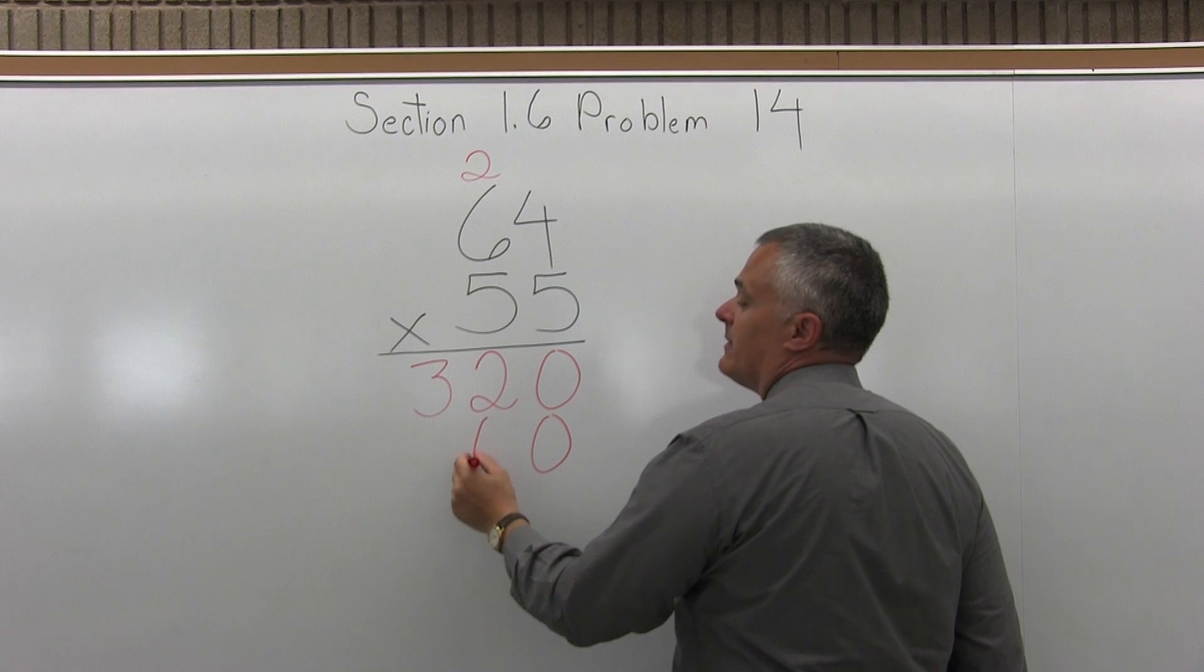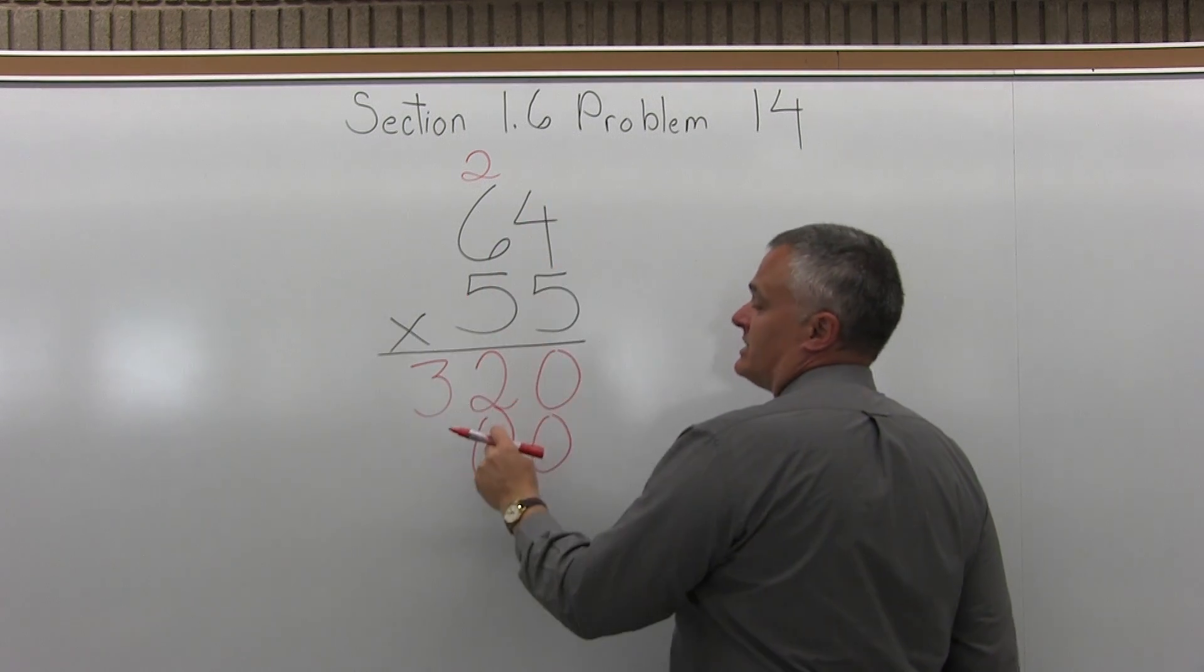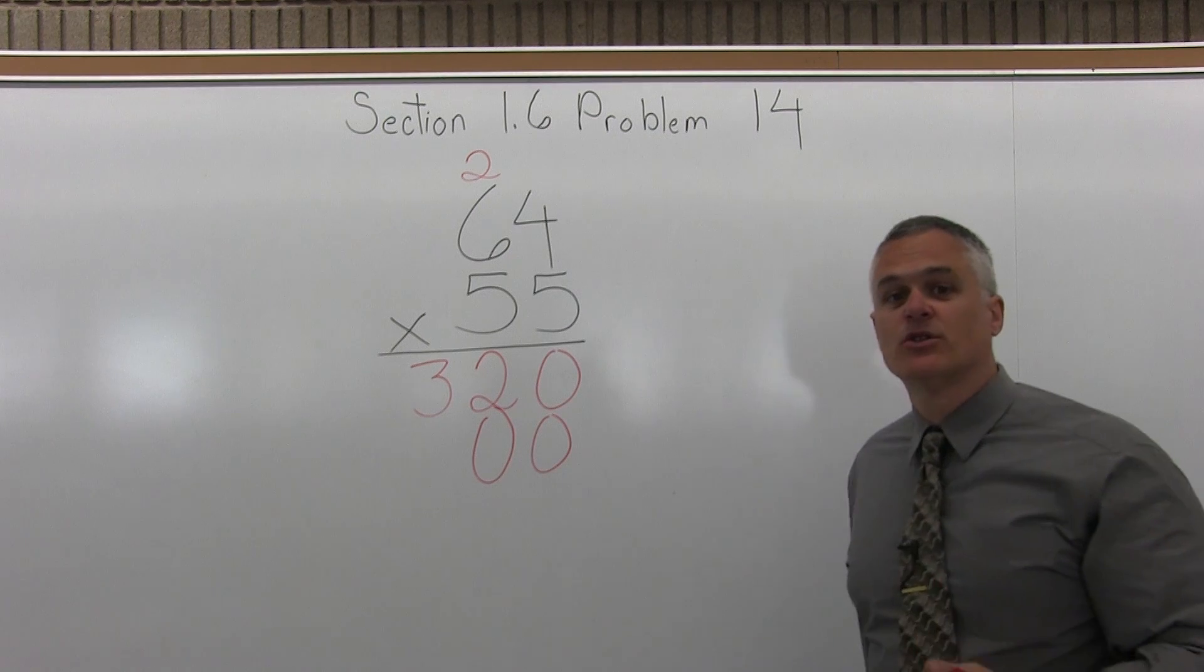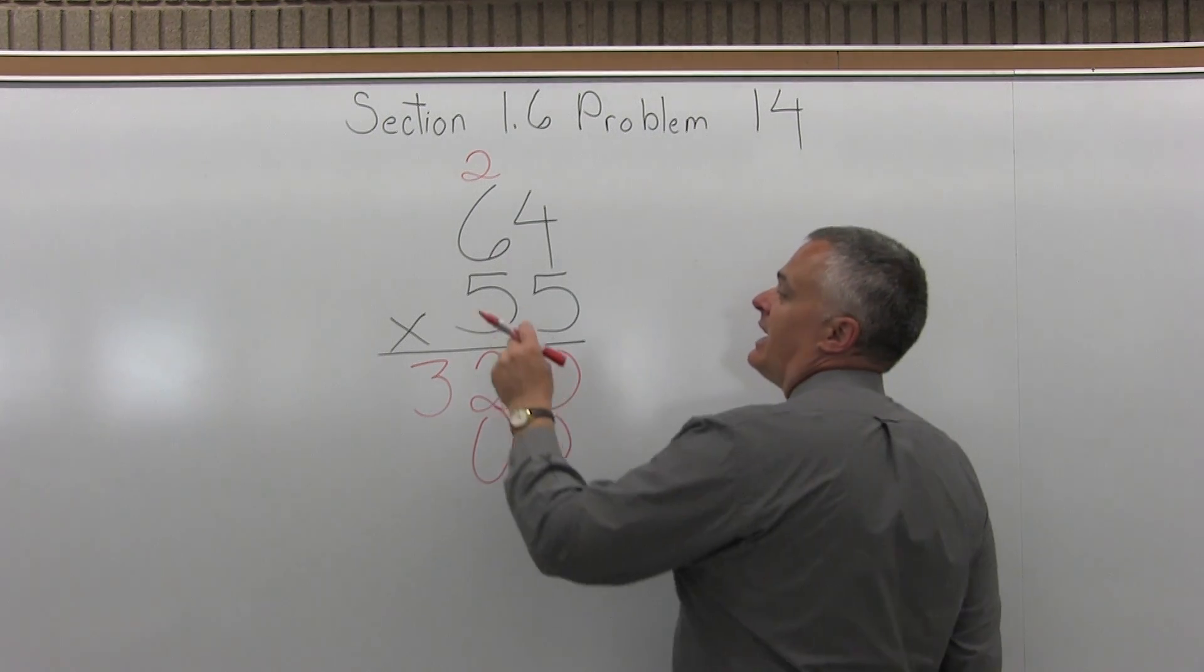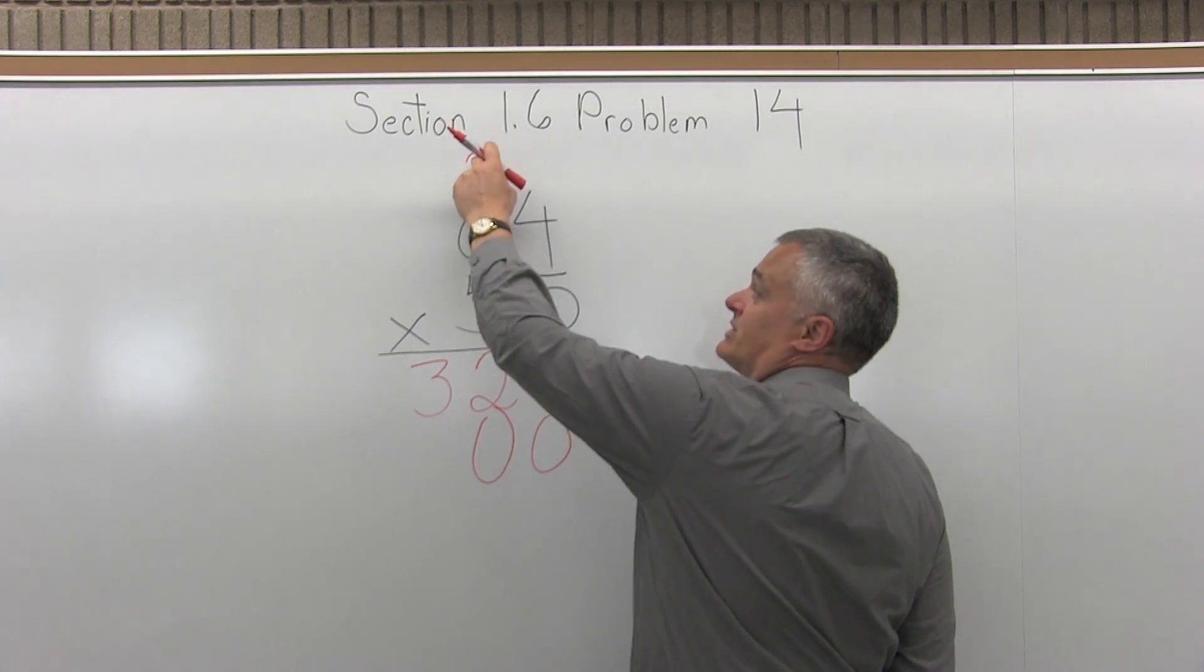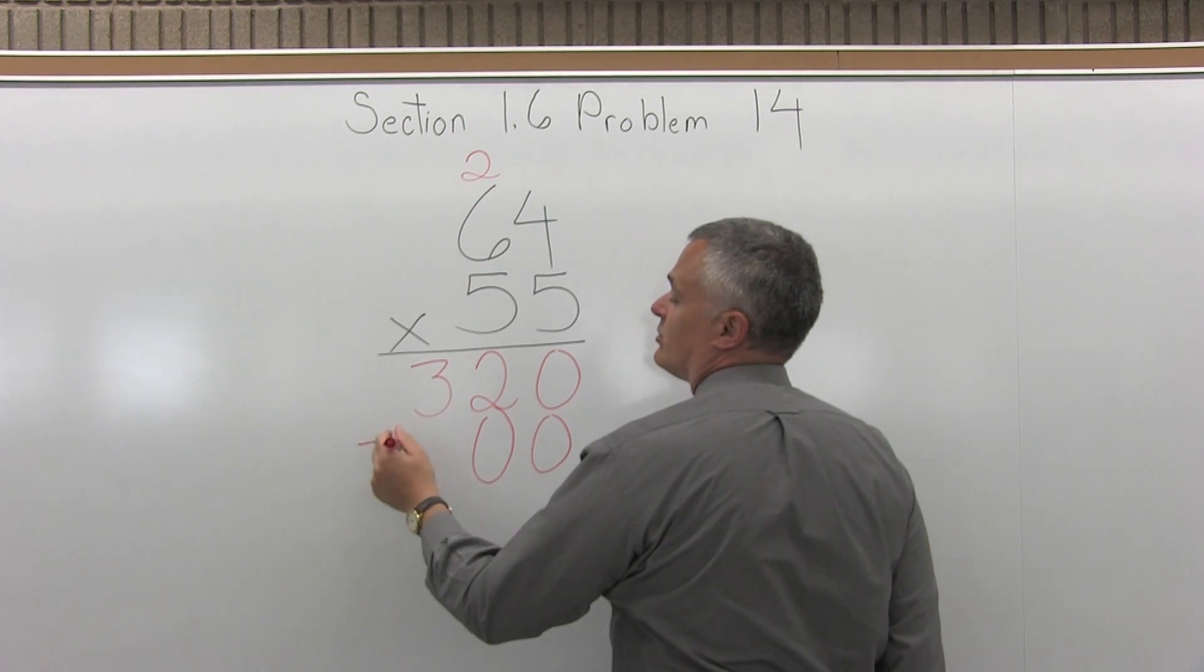5 times 4 is 20. Again, the 0 from the 20 goes in the position we're filling. The 2 from the 20 gets carried to the top of the next position. And then I have 5 times 6. 5 times 6 is 30 plus the 2 that was carried. 30 plus 2 more is 32.